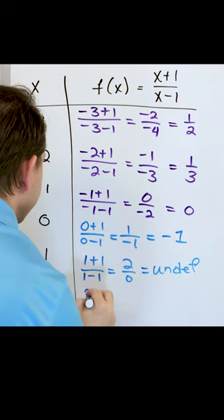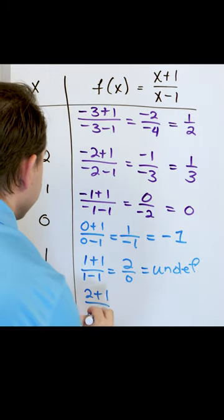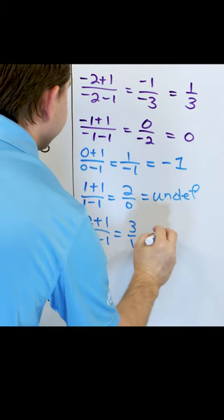Now when I put the value of two in, I'll get two plus one over two minus one. So I'll get three over one, which is three.